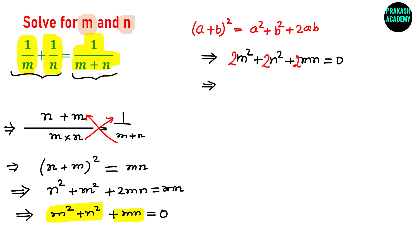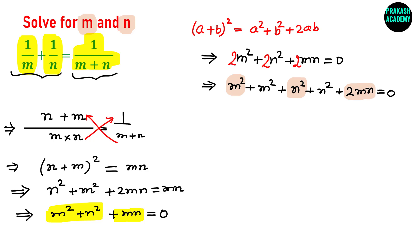Now let us rearrange. Write 2M square as M square plus M square, and 2N square as N square plus N square, keeping 2MN. We are getting close now — we have M square, N square, and 2MN, which becomes (M plus N) whole square. So the expression rearranges to (M plus N) whole square plus M square plus N square equals 0.